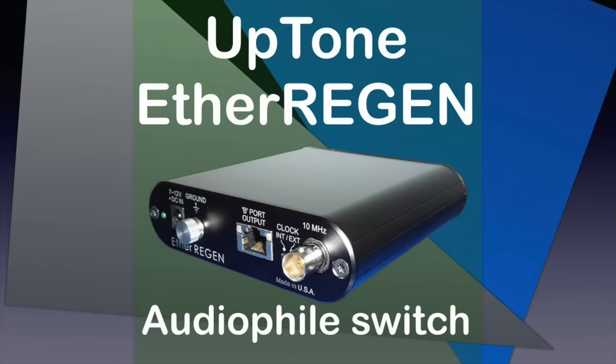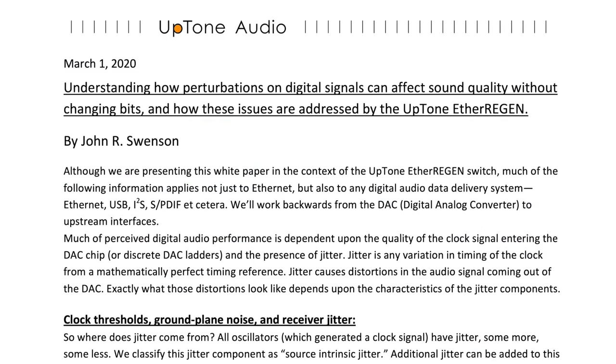My understanding of the phenomenon started while reviewing the Uptone EtherREGEN switch. Uptone Audio founder Alex Crespi sent me a copy of EtherREGEN designer John R. Swenson's white paper called 'Understanding how perturbations on digital signals can affect the sound quality without changing bits, and how these issues are addressed by the Uptone EtherREGEN.' It is now published on the Uptone Audio site — a link is in the description below this video on YouTube. Although being rather open about his theories, Swenson did not publish measurements to support it, as it requires equipment that costs a fortune to buy and maintain. Products like the EtherREGEN can only be developed by smaller companies and independent electronics designers that have spent enormous time and effort to acquire their knowledge. Their main drive is understanding what's going on, not what money there is to be made. I am rather thankful to Swenson and some unmentioned designers who confirmed his findings and were so kind to help me forward.